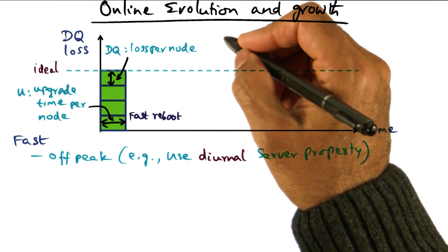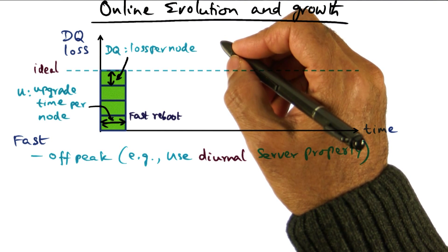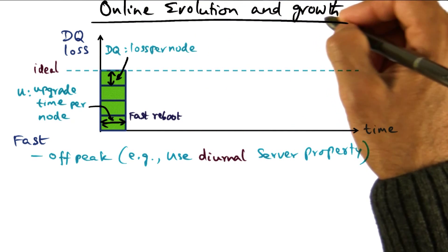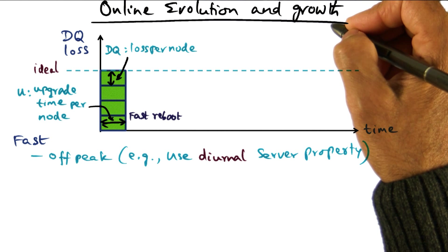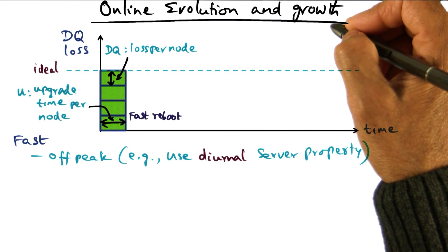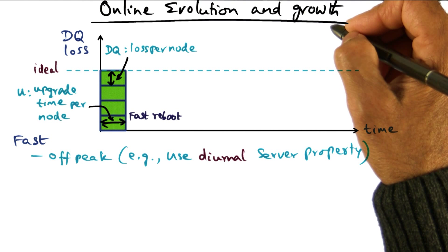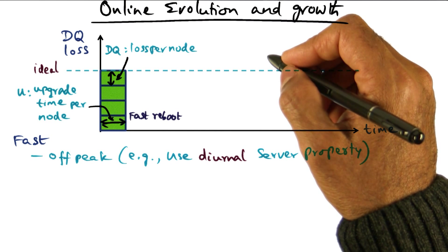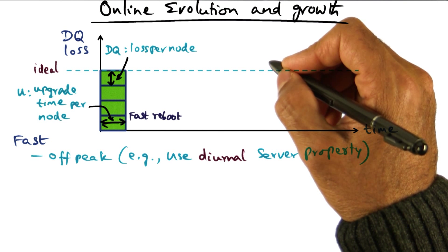As a giant scale service provider, another thing that the service provider has to worry about is online evolution and growth of the service, because services are evolving continuously. The Gmail that you're accessing for getting your email today may not be the same that you accessed a month back. So since the services are continuously evolving, the servers at the data centers have to be upgraded with a new version of the software.